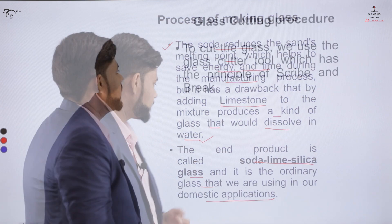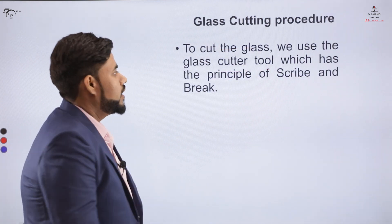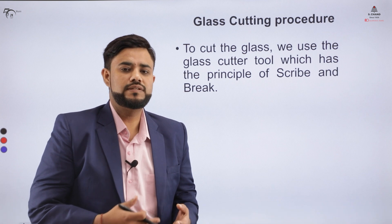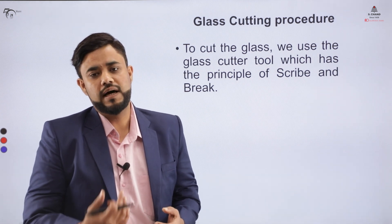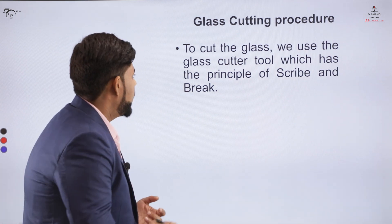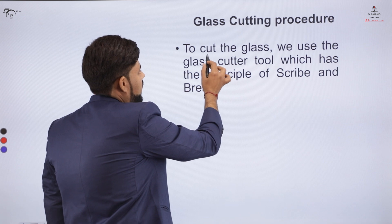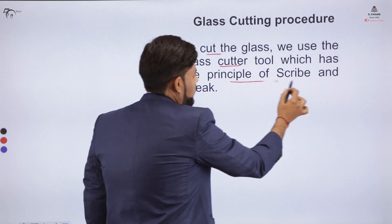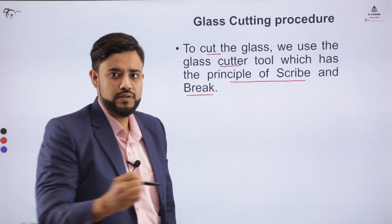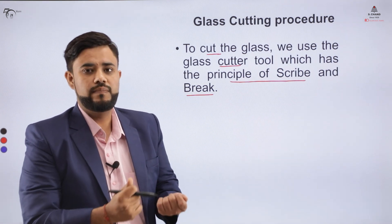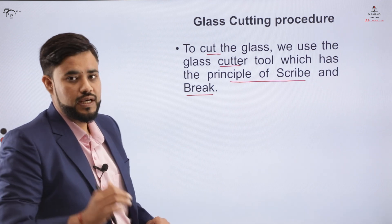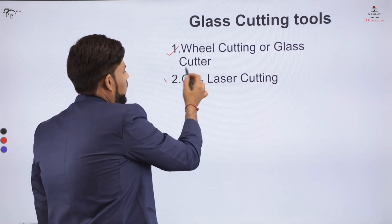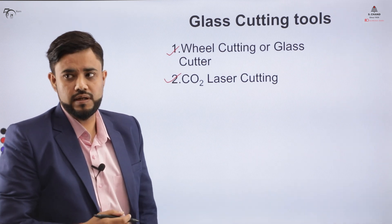Next come the glass cutting procedures. The major question that most people ask is: how do we cut glass? Someone says we have a diamond cutter, or that glass is cut by glass. We will learn about this process now. Majorly, we cut glass with the help of a glass cutter, and the principle used here is the scribe and break principle. We have two categories of tools used for glass cutting.